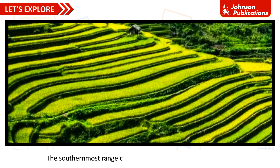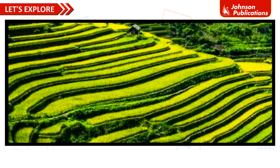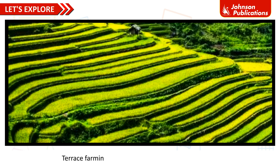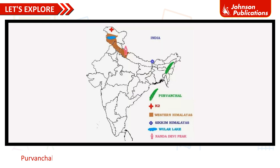The Outer Himalayas, or Shivalik, is the southernmost range of the Himalayas. This range is covered with thick forests which are home to many wild animals. Terrace farming is done on the slopes of the Shivalik.